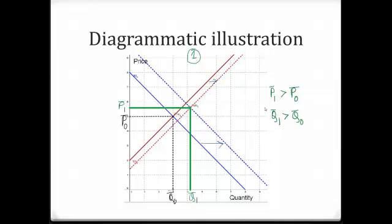So in this situation, the final equilibrium price is higher and the final equilibrium quantity is higher as well. Observe that the extent of shift in the demand curve is much higher than the extent of shift in the supply curve, which means the demand factor is stronger here. Because of the higher relative strength of the demand factor, equilibrium price has actually gone up compared to the initial equilibrium price.